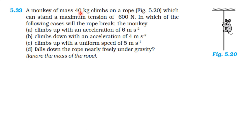A monkey of mass 40 kg climbs on a rope which can stand a maximum tension of 600 N. In which of the following cases will the rope break? Case 1: monkey climbs up with acceleration 6 m/s². Case 2: climbs down with acceleration 4 m/s². Case 3: climbs up with uniform speed 5 m/s. Case 4: the monkey falls down the rope nearly freely under gravity.